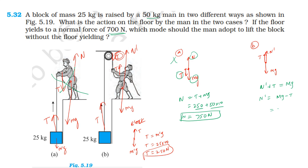In the second case, the force on the floor is 500 N. Since 500 N is less than the floor's limit of 700 N, the floor does not yield. Therefore, the man should adopt the second mode to lift the block safely.